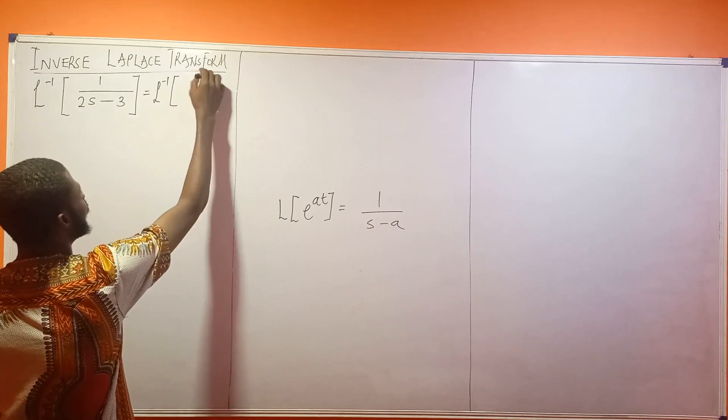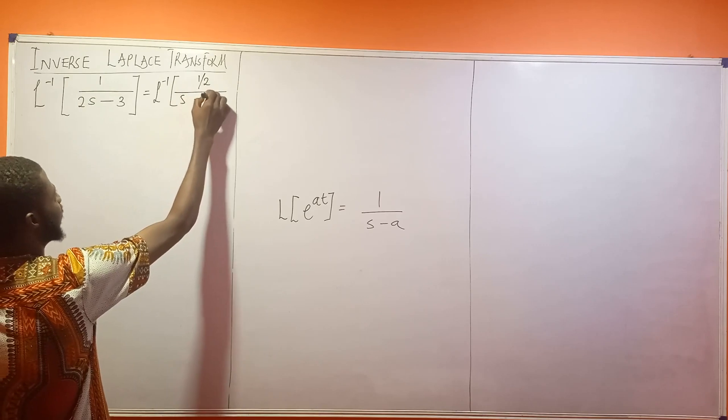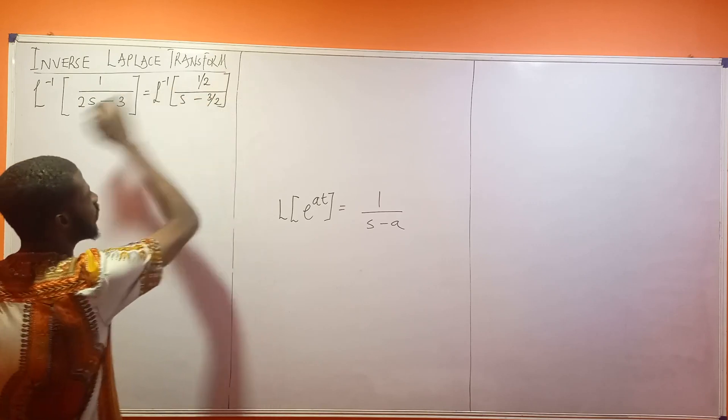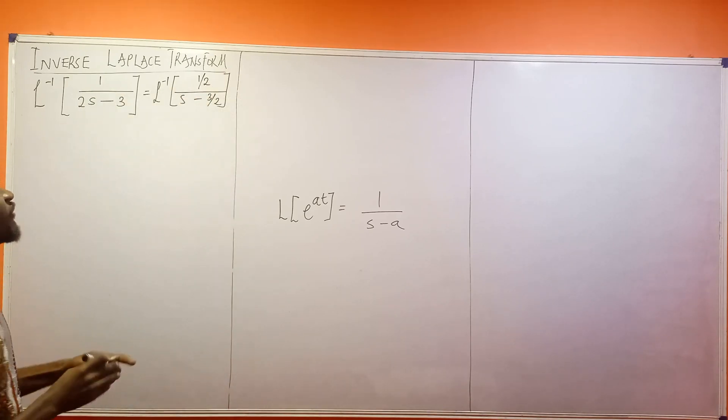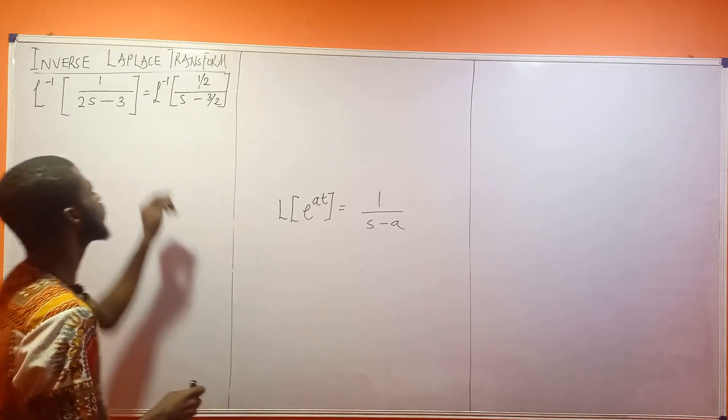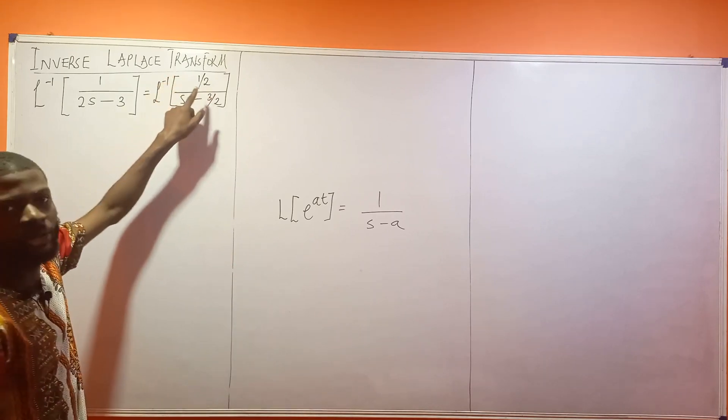So I'm going to have 1 over 2 here all over s minus 3 over 2. I'm going to have that very expression there. Now the next thing that will happen is this 1 over 2 here is actually a constant.